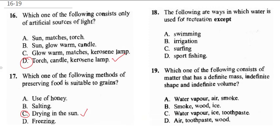Question 18 says: the following are ways in which water is used for recreation, except. Now swimming is a recreation activity — you use water. Irrigation is for farming, so it's not a recreational activity; it's an agricultural activity. Surfing — yes, you can surf on water. You can also do sport fishing. So the correct answer is irrigation, which is excluded because it's a farming activity.